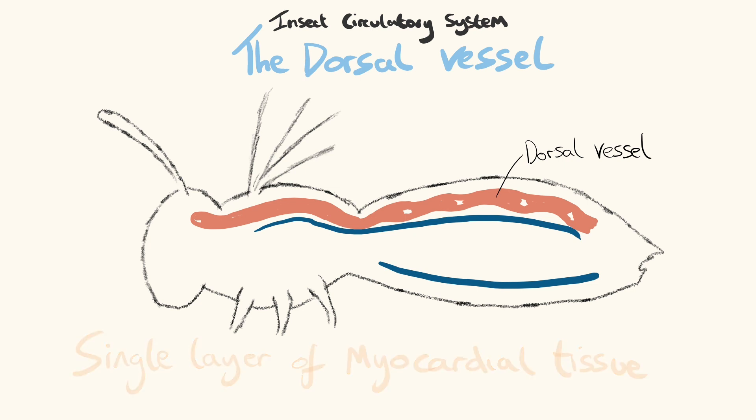It can be defined by two parts: the anterior section, or aorta, which passes the cerebral ganglion and ends in the head, and the posterior section, which is also termed the heart. This part is restricted to the abdomen in most insect orders.